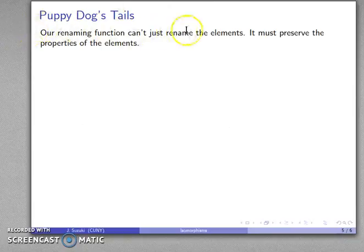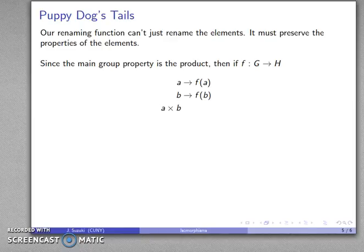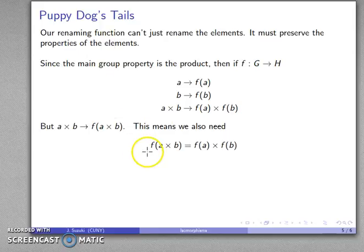Our renaming function has to preserve the properties of the elements. The key property of any element of a group is the product. So if I have a one-to-one onto function F from G to H, I want those products preserved: A is assigned to F(A), B is assigned to F(B), and I want A times B to be assigned to F(A) times F(B). That means F(A times B) must equal F(A) times F(B), and this has to be true for all elements A and B in G.